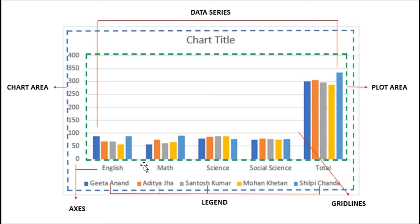Next is the legend. The legend is the label of the data which is being represented. You can see there are various colors in the legend, and those colors are plotted in the data series. So the legend labels the data being represented in the data series.